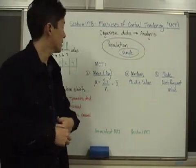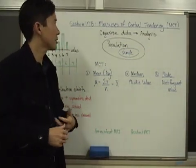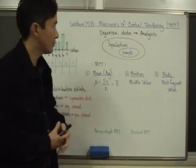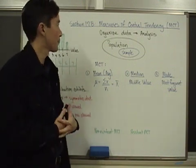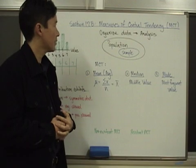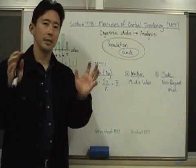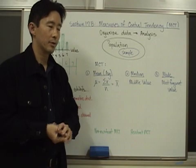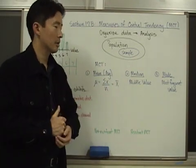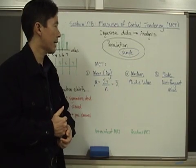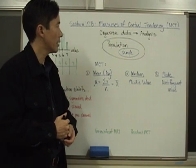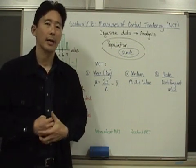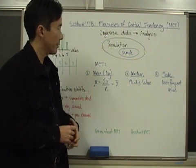Let's take a look at section 17b, which is called the Measures of Central Tendency — we'll abbreviate that as MCT. In chapter 17a, we took our numerical data, organized it, and broke it down between discrete and continuous data. Once we organize the data, the next thing we want to do is analyze it.